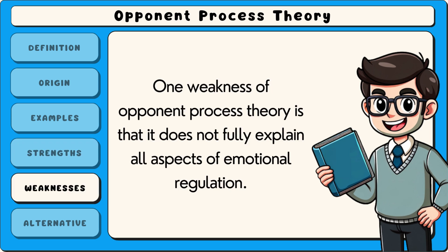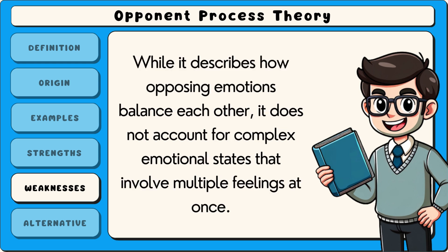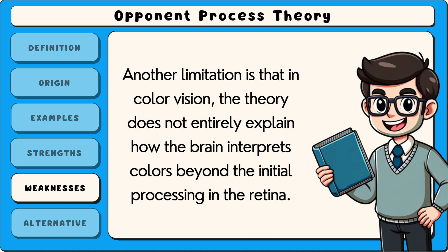One weakness of opponent process theory is that it does not fully explain all aspects of emotional regulation. While it describes how opposing emotions balance each other, it does not account for complex emotional states that involve multiple feelings at once. Another limitation is that in colour vision, the theory does not entirely explain how the brain interprets colours beyond the initial processing in the retina.